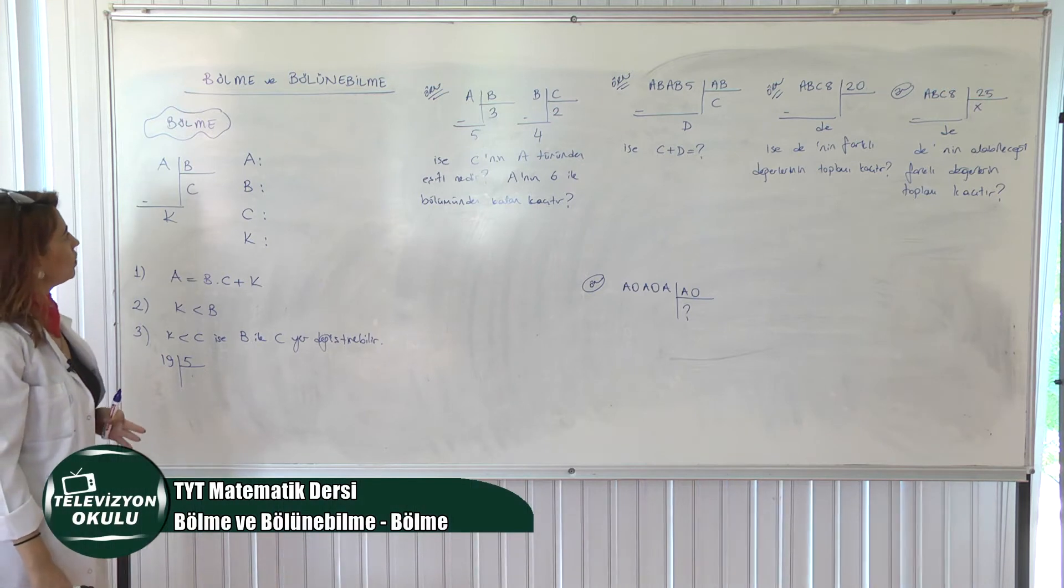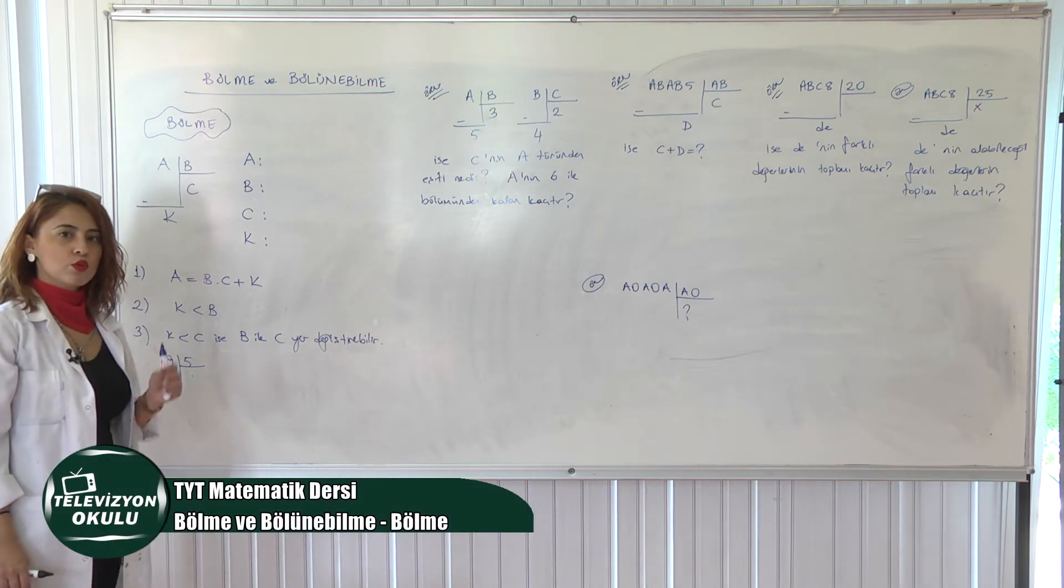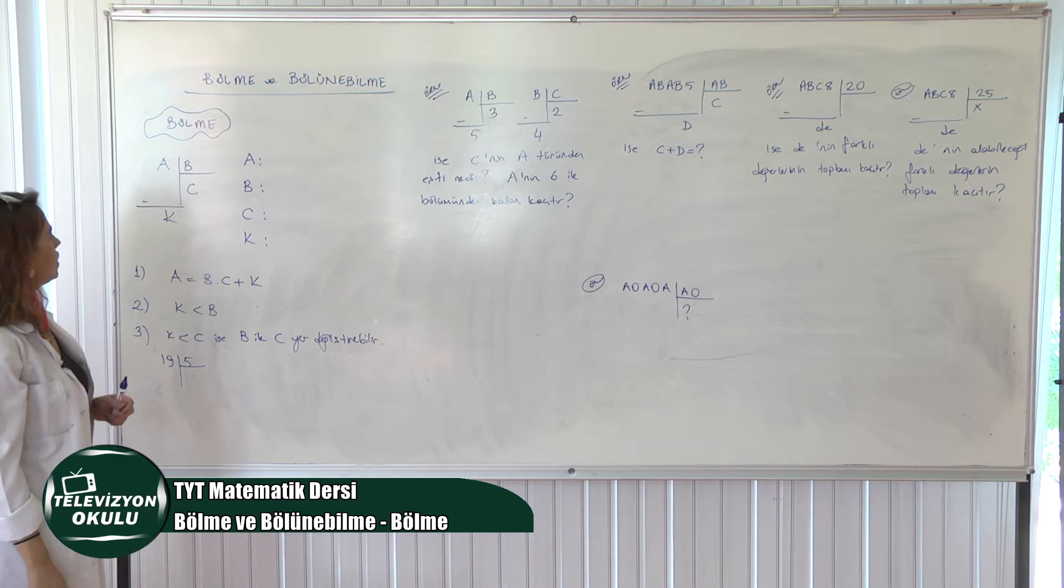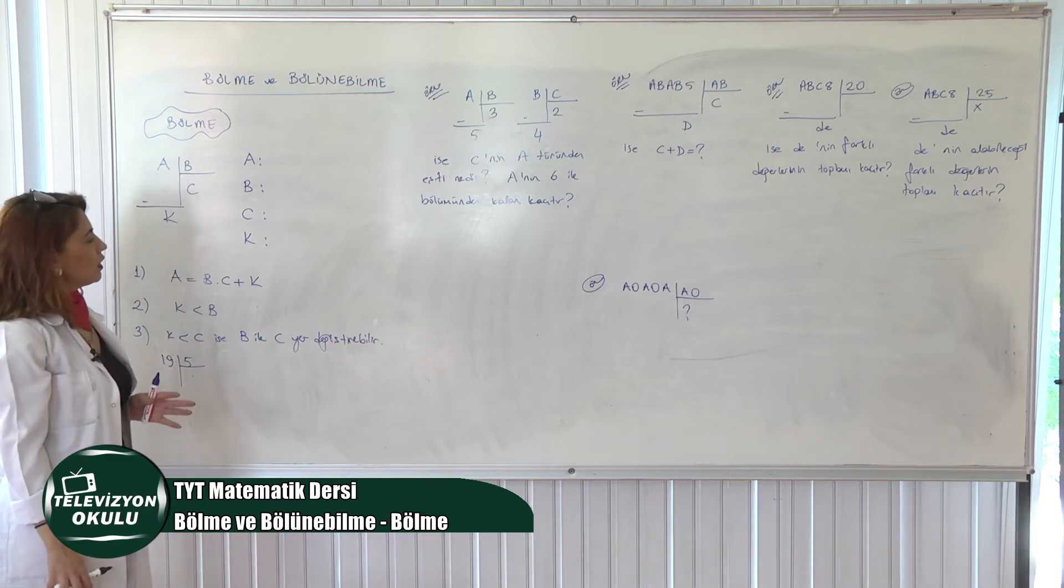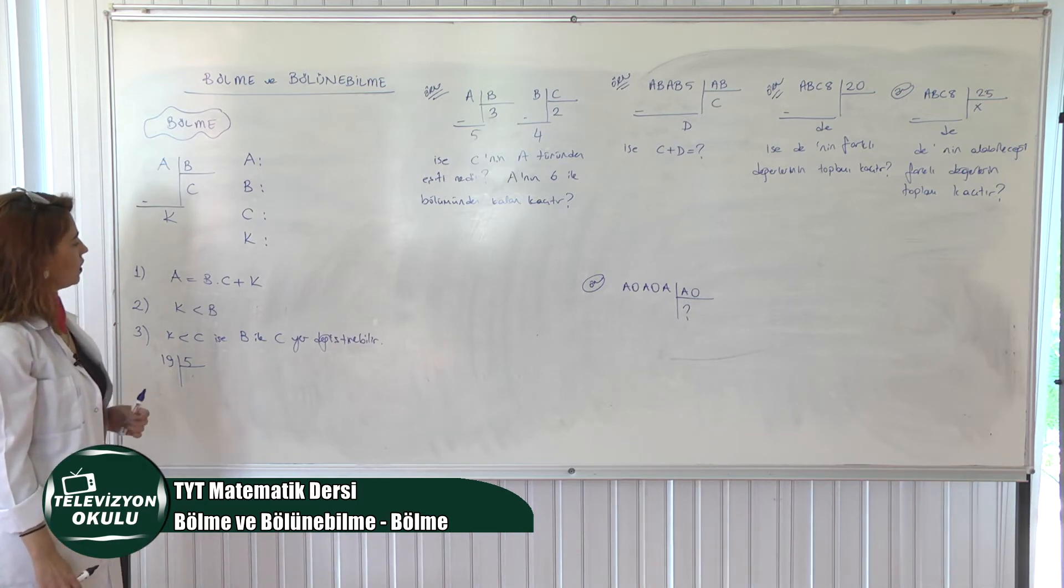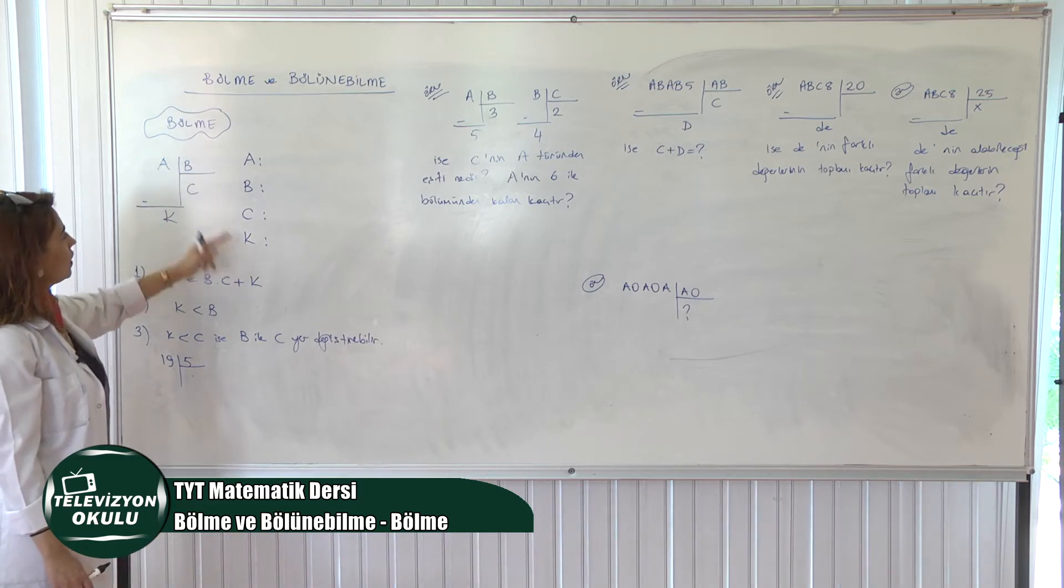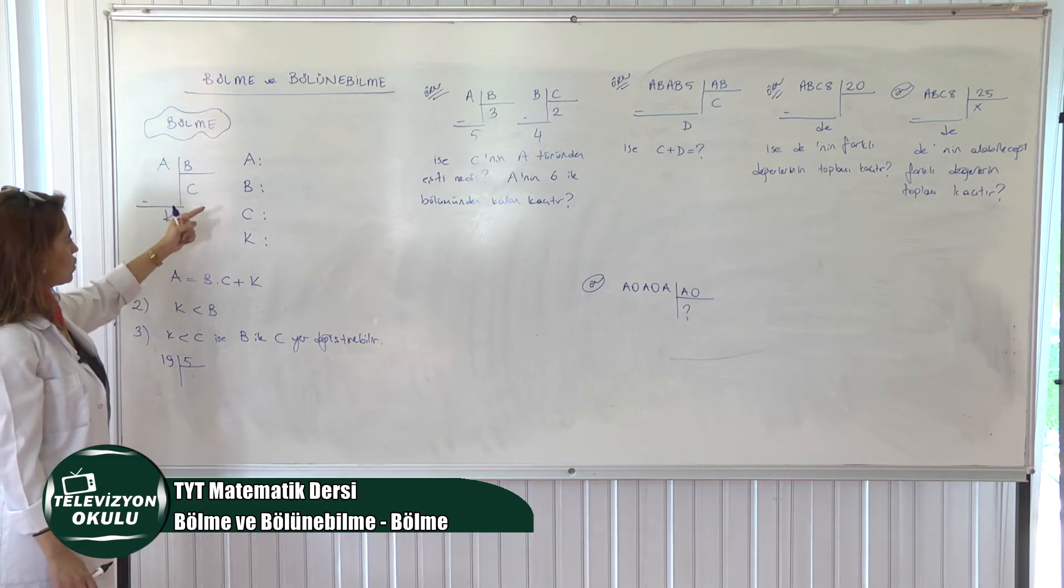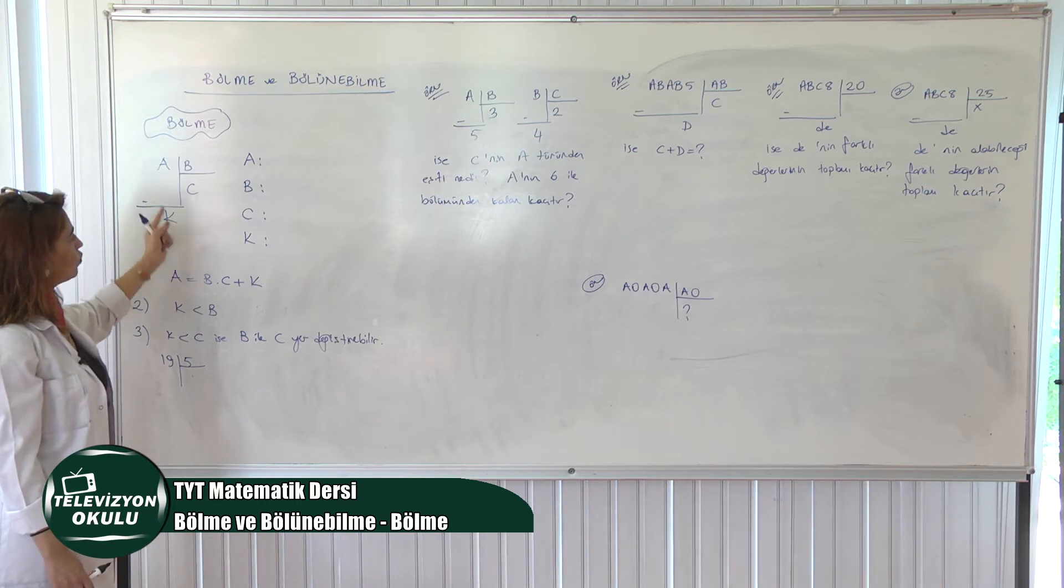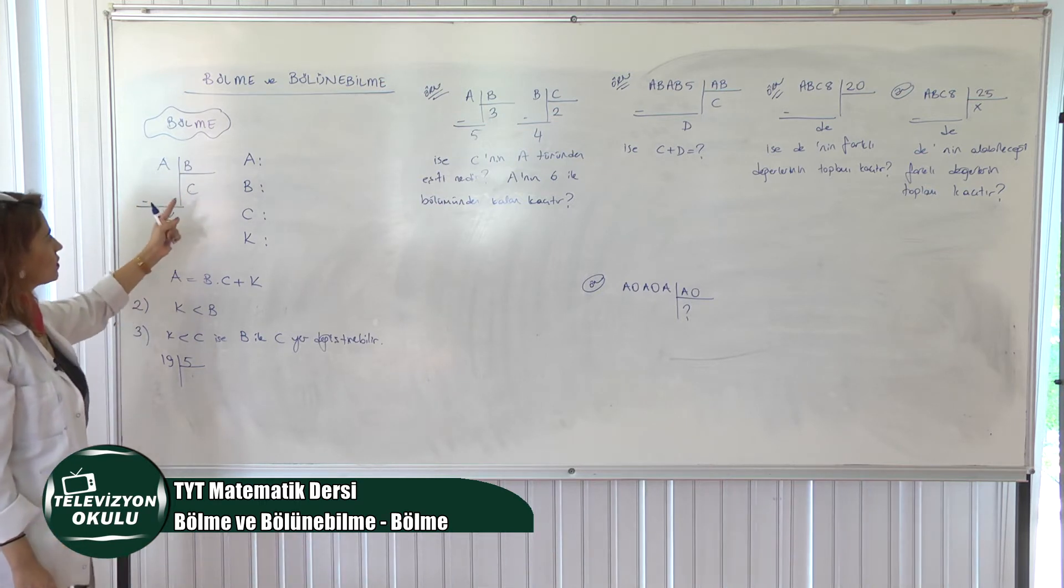Evet, konumuz arkadaşlar bölme ve bölünebilme. İlk olarak bölme ile başlıyoruz. Öncelikle bölme ile alakalı bilmemiz gereken şeyleri söyleyelim. A sayısını B sayısına böldüğümde C ortaya çıkıyorsa ve kalan da K ise bunlara hangi isimleri veriyorduk? Bir hatırlayalım.